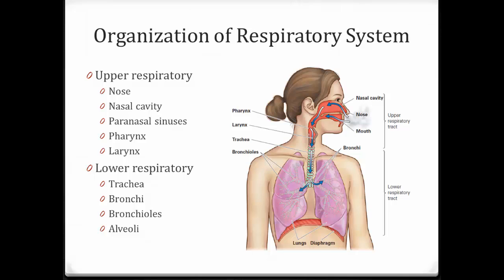So let's look at the organization of the respiratory system. We can divide it into the upper respiratory and lower respiratory. We're going to concentrate on upper respiratory — those structures being the nose, nasal cavity, paranasal sinuses, pharynx, and larynx. Lower respiratory then includes everything further down: the trachea, bronchi, bronchioles, and alveoli. The last three really compose the lungs themselves.